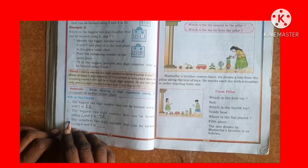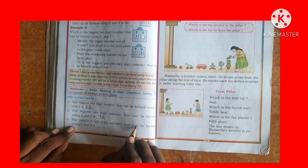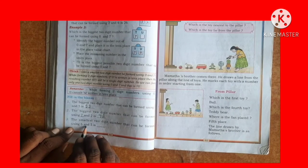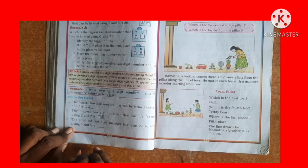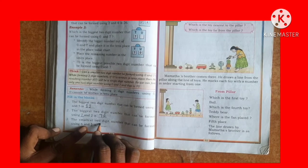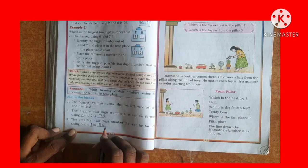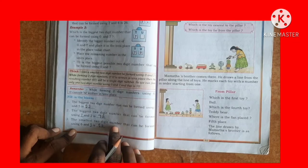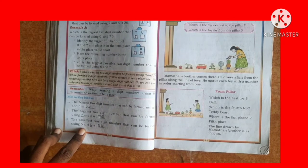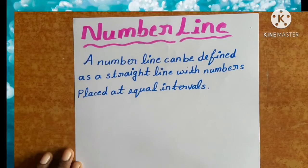Third one: the smallest 2-digit number that can be formed using 6 and 5. First write the small number — 5 is the small number, next write 6. So 56 is the smallest 2-digit number that can be formed using 6 and 5.